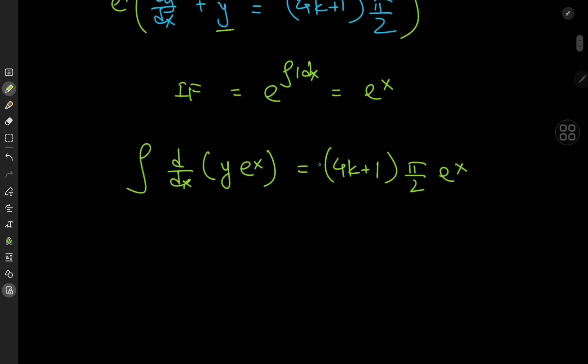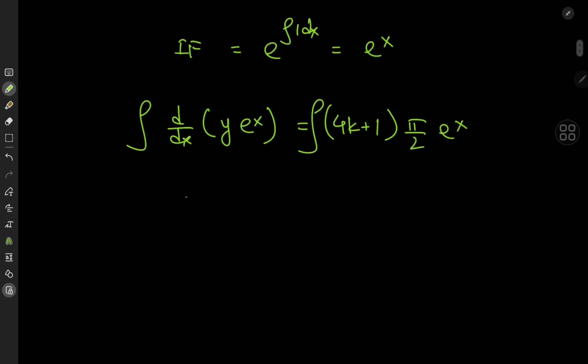Now integrating with respect to x gives us y times e to the x equal to 4k plus 1 times pi by 2 times e to the x plus a constant of integration, c.